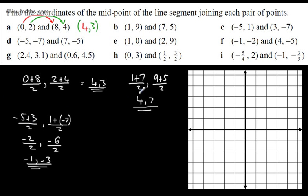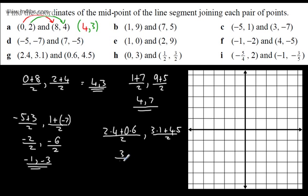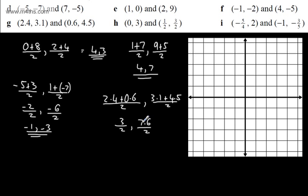The reason I prefer just adding and dividing is when things get messy. With coordinates 2.4, 3.1 and 0.6, 4.5: 2.4 plus 0.6 divided by 2 gives 3 divided by 2; 3.1 plus 4.5 gives 7.6 divided by 2. Writing as decimals: 1.5 and 3.8, giving midpoint (1.5, 3.8).